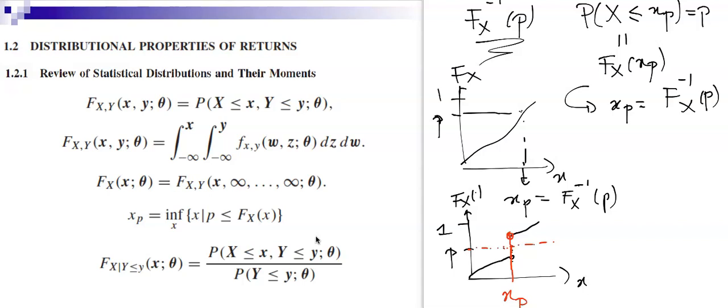Quantiles are really useful in finance. Most of the time a quantile describes the maximal acceptable risk. In finance we define what is known as the Value at Risk, which is nothing but a quantile of a distribution. We also have here the conditional distribution of X given Y ≤ y.